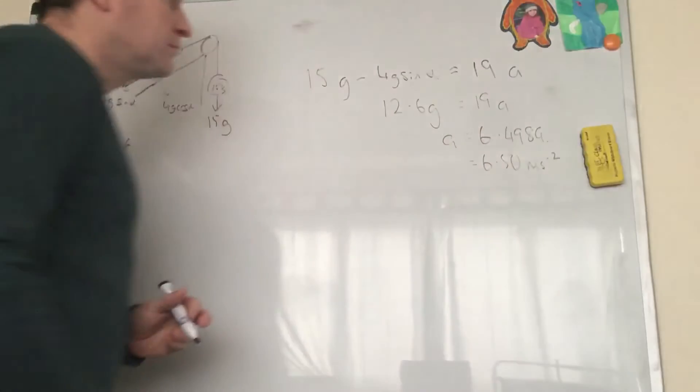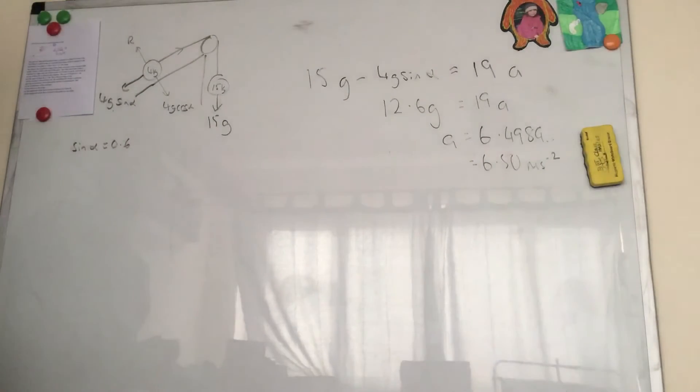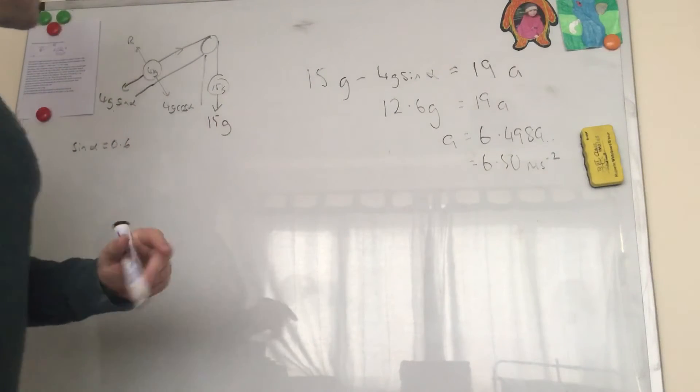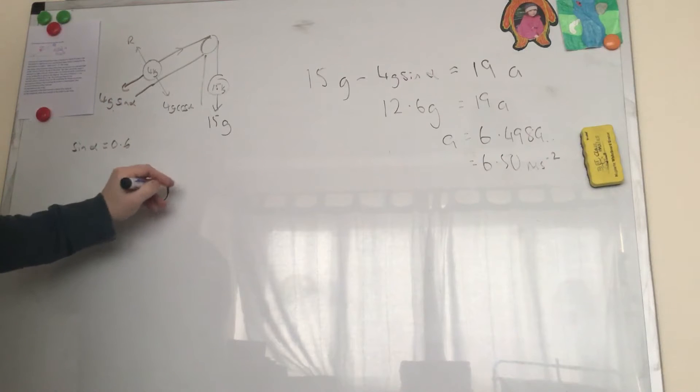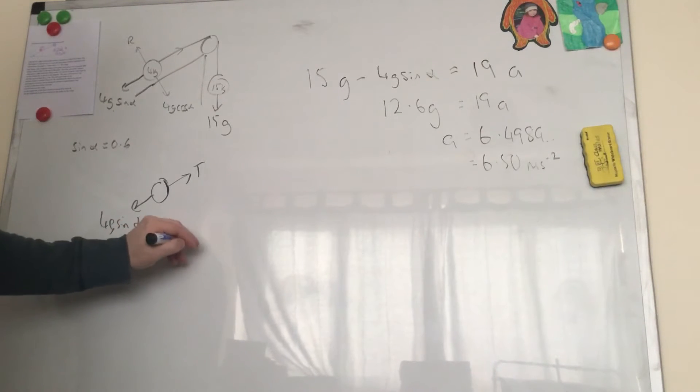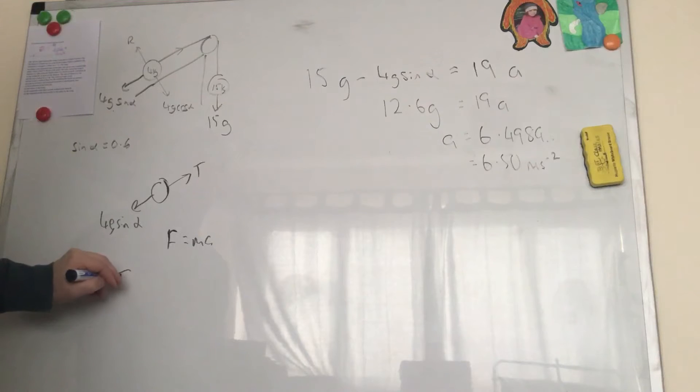So part B goes on to say find the tension in the string. I'm just going to go through how I would do part A first because it does offer a little alternative. I formed an equation of motion for this one instead of this one. Essentially, we've got tension and we've got 4g sin alpha going that way. So if we form F equals ma for just that one, we get T minus 2.4g equals mass 4, so 4a.